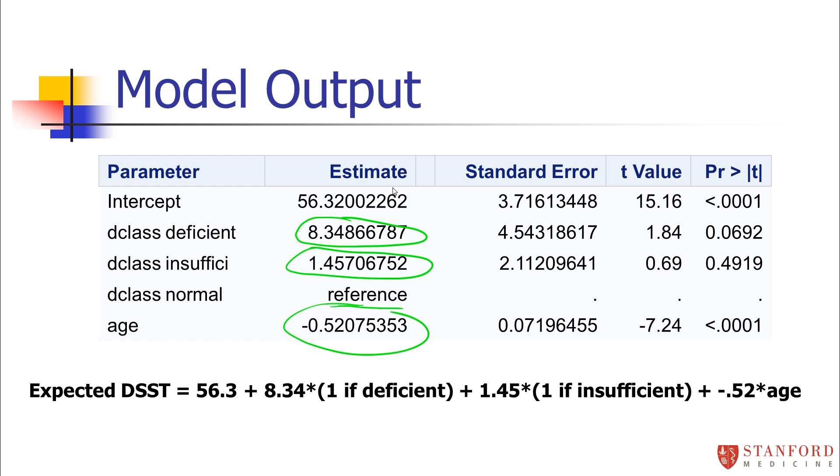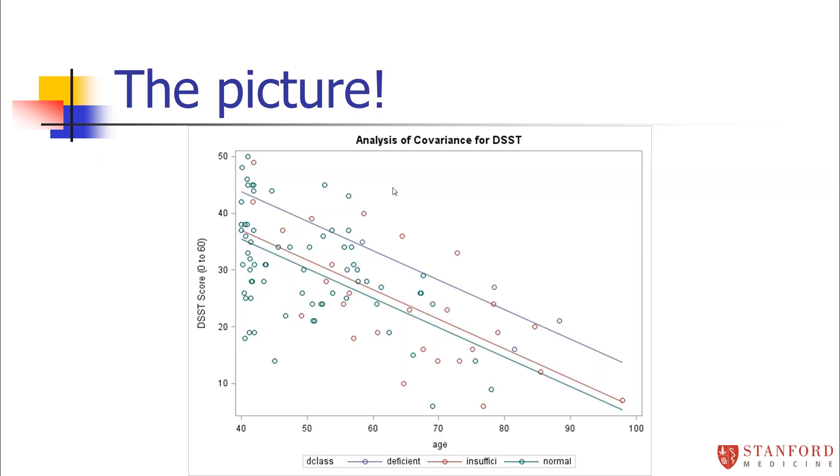So that's the final model. But what's great about this, is now I can report age-adjusted means for those groups. And this is just showing the picture here. Again, this is showing the slopes in each of the three groups for the relationship between age and DSST scores, so that you can see that in all three groups.